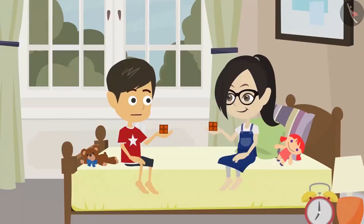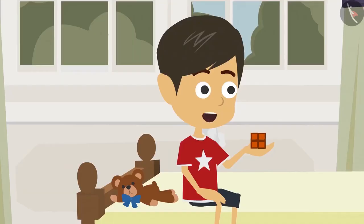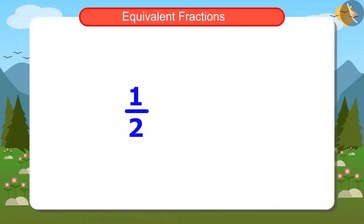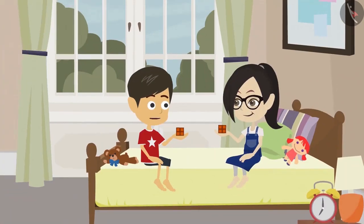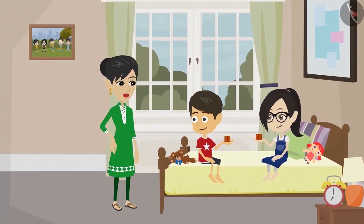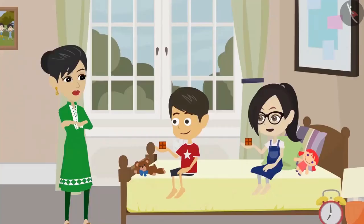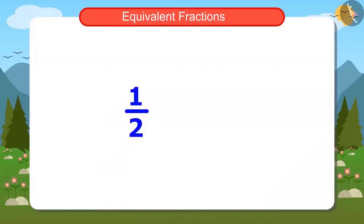Hey, there is nothing left for mummy! I understood — Aunty knew that there would be four pieces of chocolate in both one half and two fourths for us to eat. So she asked us to distribute the chocolate like this. That means one half and two fourths are equal! Seems like it. Mummy, there is no piece of chocolate for you, and we have also understood that one half and two fourths are equal.